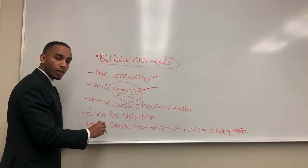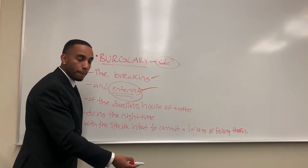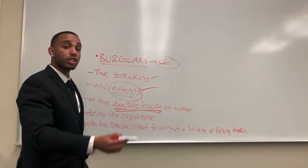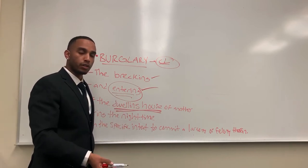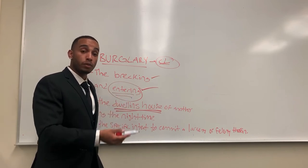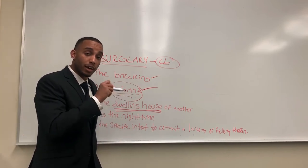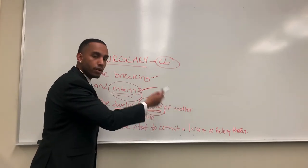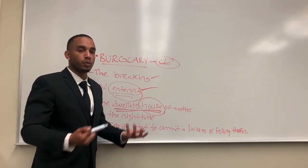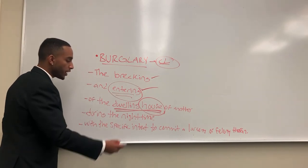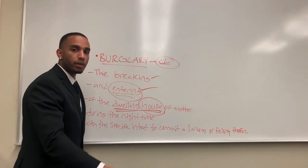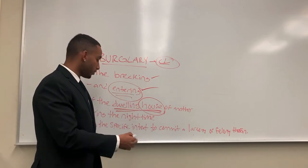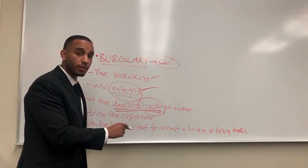Under common law, the third element is the dwelling house of another — basically where someone sleeps, their castle. This could be someone's house, an apartment, or even a tent a homeless person sleeps under, because that is their castle. Of another simply means a dwelling house that does not belong to you. The fourth element, during the nighttime under common law, is sunset to sunrise. As long as it's dark, that constitutes the nighttime element.